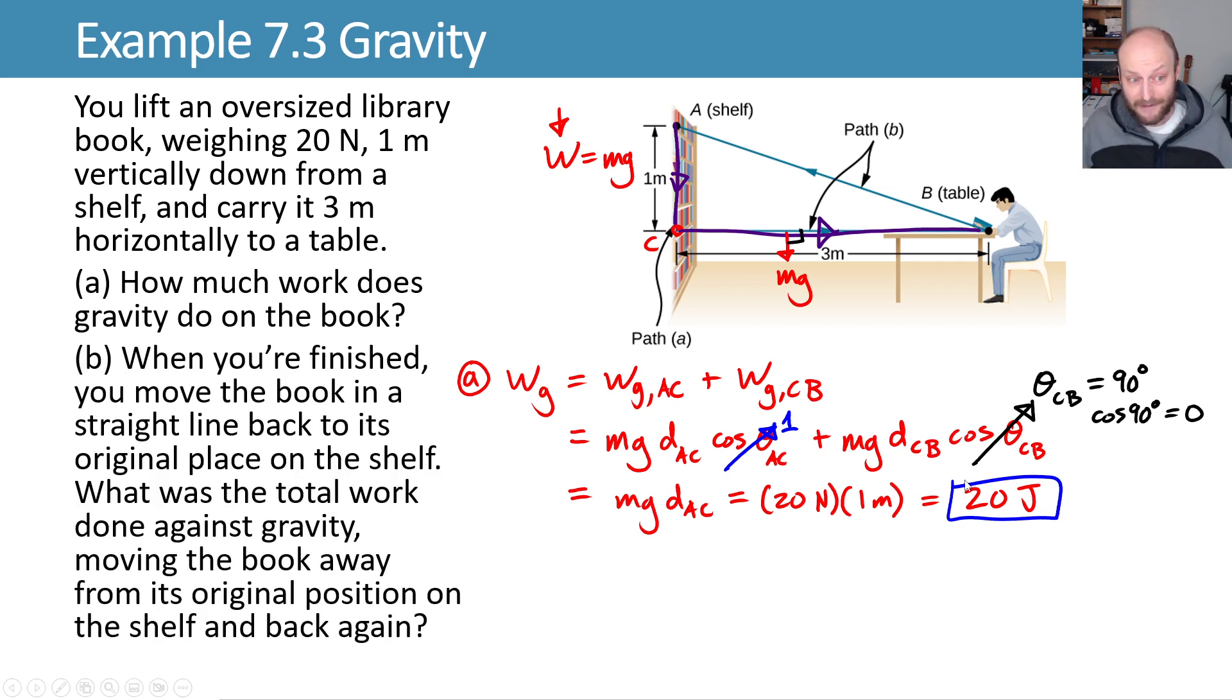We're done reading. We move the book back to its original place on the shelf. What's the total work done against gravity, moving the book away from its original position on the shelf and back again? Well, let's find the work done on this return path by gravity, and then we can do the network as the sum of those two things.